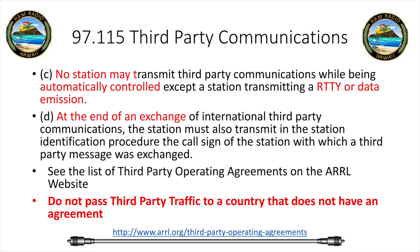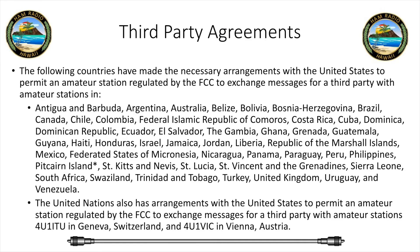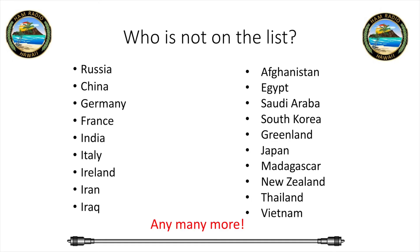You need to check the third-party operating agreements on the ARRL website. It lists all the foreign countries that have agreed to allow U.S. stations to pass traffic. Do not pass traffic to a country that does not have that agreement. Here's a list of stations where third-party agreements are in effect — some big ones include Australia, Mexico, Cuba, United Kingdom, and Turkey. It's always on the ARRL website, so make sure you're familiar with it.